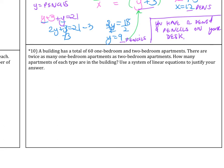A building has a total of one bedroom apartments, so I'll call that x, and then two bedroom apartments are y. So a total of 60 one bedroom and two bedroom. There are twice as many one bedroom apartments as two bedroom apartments. How many apartments of each type are in the building? Now you're going to use a system of linear equations to justify your answer. So the first thing is we defined our variables. x is one bedroom, and then y equals two bedroom. And then there are 60, so we can say x plus y equals 60 apartments.